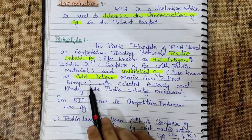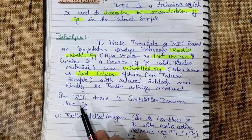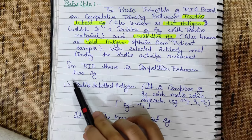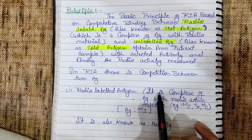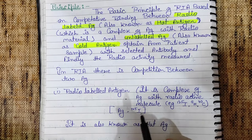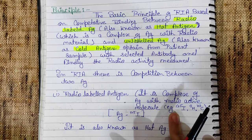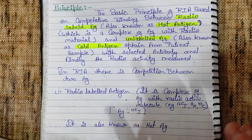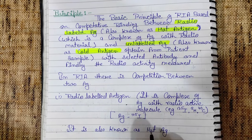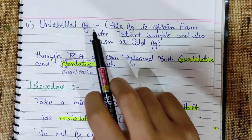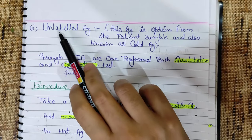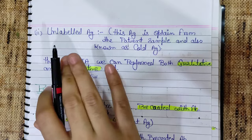Cold antigen is obtained from the patient sample. In RIA, there is a competition between two antigens: first, the radio-labeled antigen, which is a complex of antigen with a radioactive molecule; and second, the unlabeled antigen obtained from the patient sample, also known as cold antigen, which we do not label.